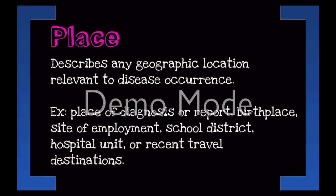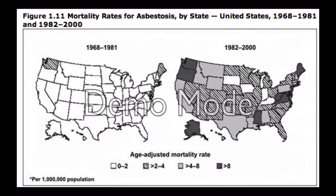Finally, place describes any geographic location relevant to disease occurrence. This is specific to the health-related event in question. This could be the place of diagnosis, a birthplace, site of employment, school district, hospital unit, or recent travel destinations. Many times, place is represented by a map.